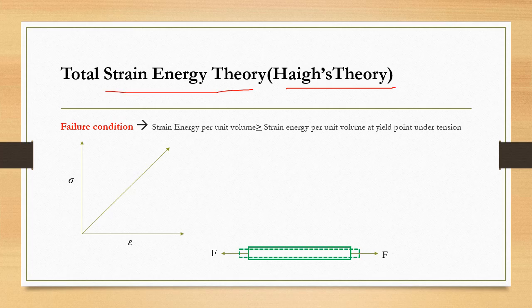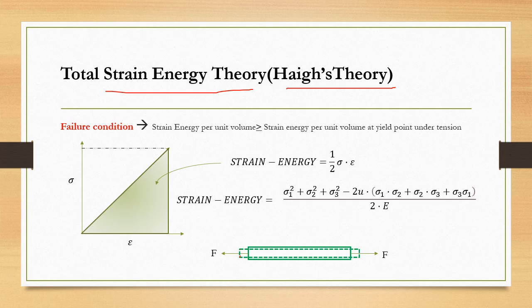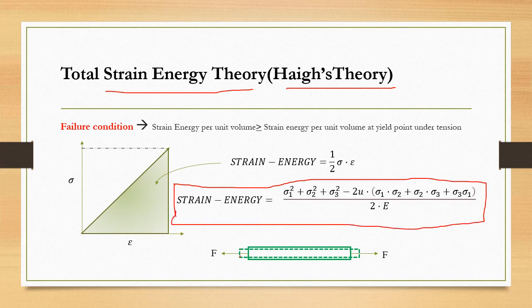For the strain energy theory given by Haigh, a total strain energy approach is used. Strain energy is the energy stored in the material due to straining. If we apply a load F to a component and plot the stress-strain curve, the strain energy is the area under the curve, equal to (1/2) × Sigma × Epsilon. For a three-dimensional state, the strain energy expression becomes a corresponding 3D equation. When this strain energy exceeds that at the yield point from the simple tension test, the material will fail. This theory is advantageous because it considers both stress and strain.